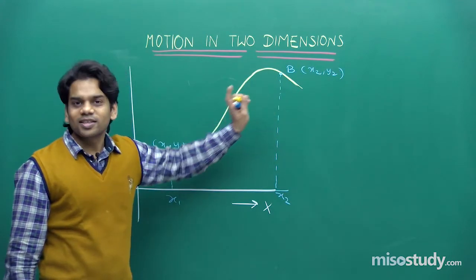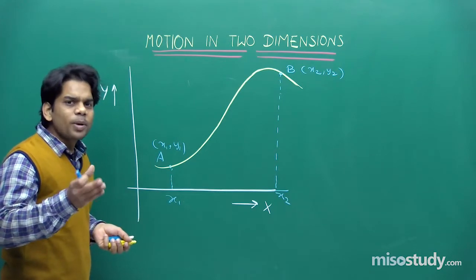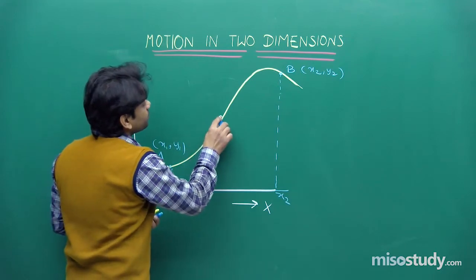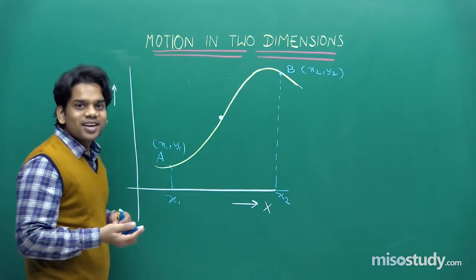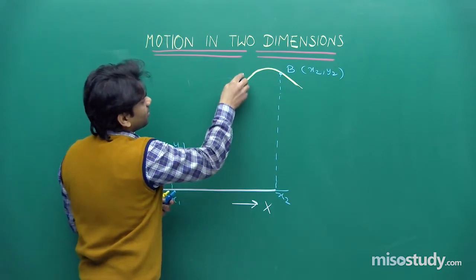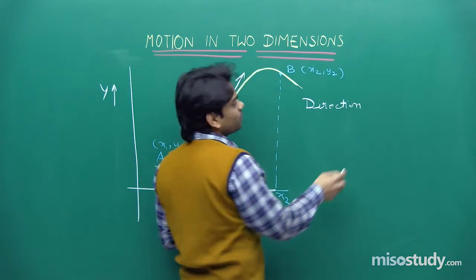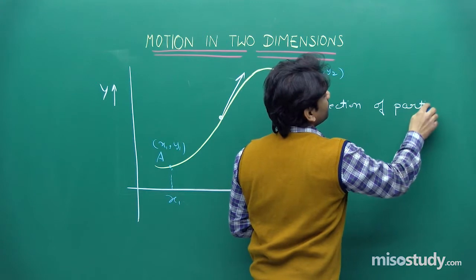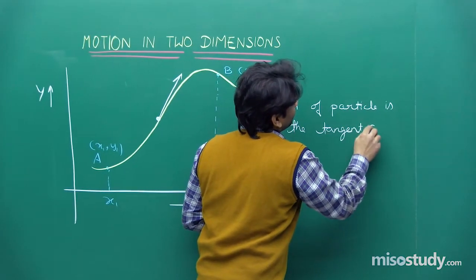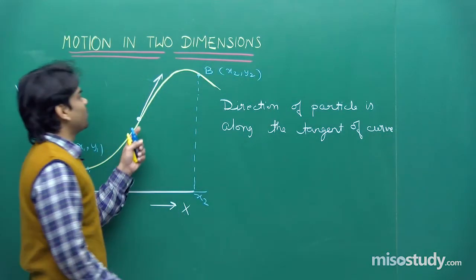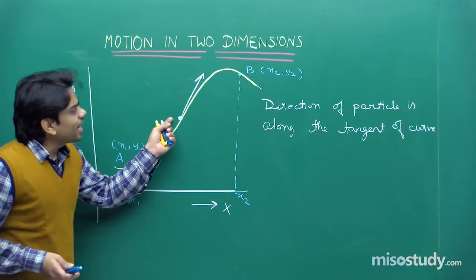This path is actually the trajectory — the path followed by the particle. At some instant, the particle is at a general coordinate (x, y), and it is moving along this path. The net velocity is directed along the tangent of the curve. So our first key point: the direction of the particle's motion is along the tangent of the curve.